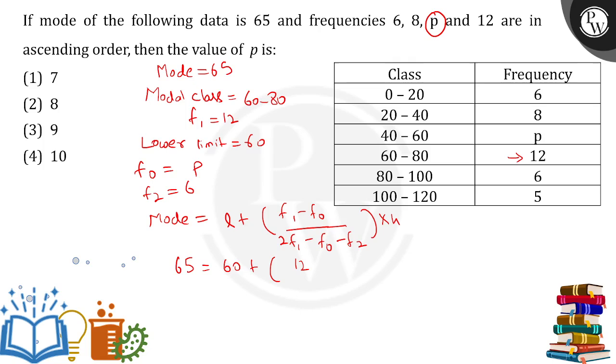This is a simple equation which is being formed which we need to solve. 65 equals 60 plus the formula. 60 going on the other side, we are having 5, and simplifying this, this will be 12 minus f upon...